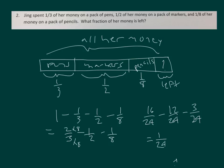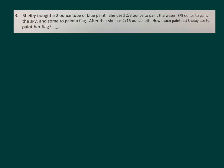Jing has one-twenty-fourth of her money left. Shelby bought a two-ounce tube of blue paint. She used two-thirds ounce to paint the water, three-fifths ounce to paint the sky, and some to paint a flag. After that, she had two-fifteenths ounce left. How much paint did Shelby use to paint her flag?